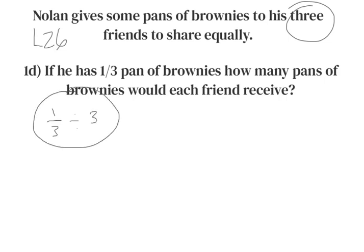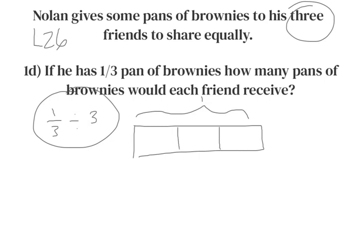So what does that look like as a tape diagram? You're going to draw your whole right here. Here's our whole, and our whole is divided into thirds. He only has a third of a pan, so this is the third that he has. But he has to divide this third of a pan by three people, so each friend is going to receive this small section.